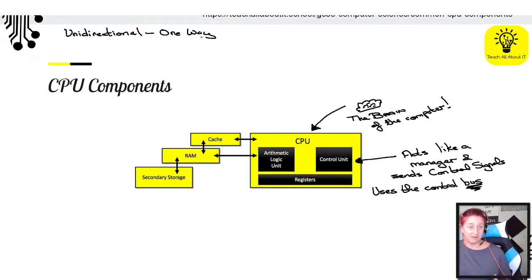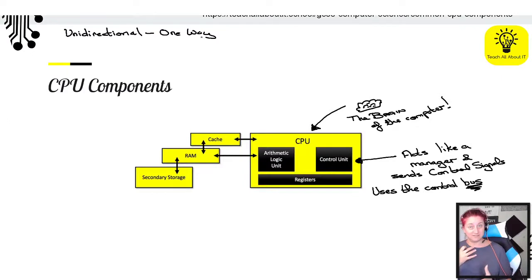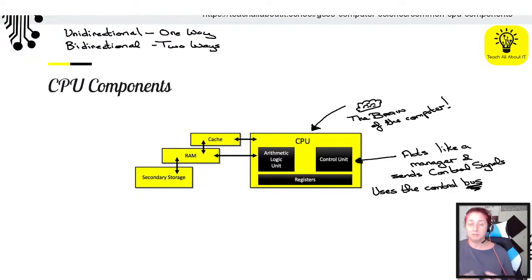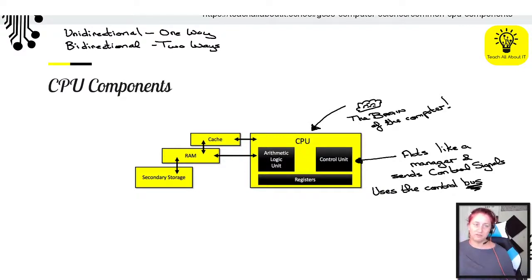If you have a bi-directional bus, the communication can go both ways. The data bus is bi-directional because you can load data and you can store data. Bi means two, uni means one. So unidirectional — it goes one way; bi-directional — two ways. The control bus is unidirectional because it is sending a control signal only.